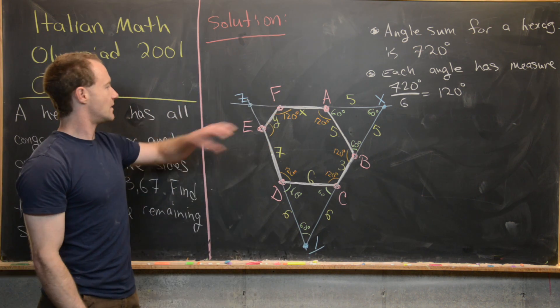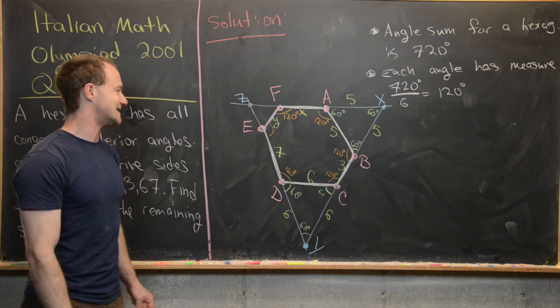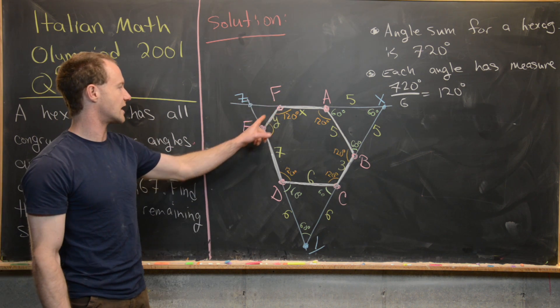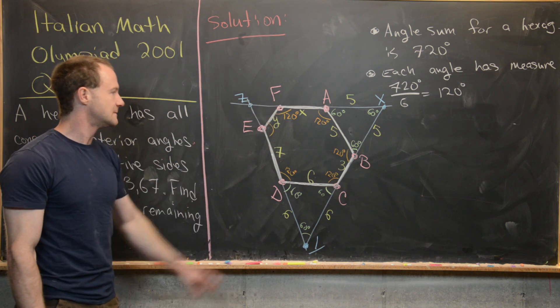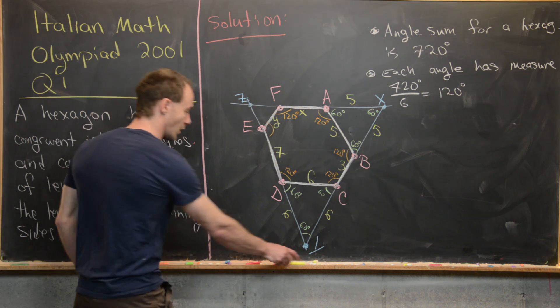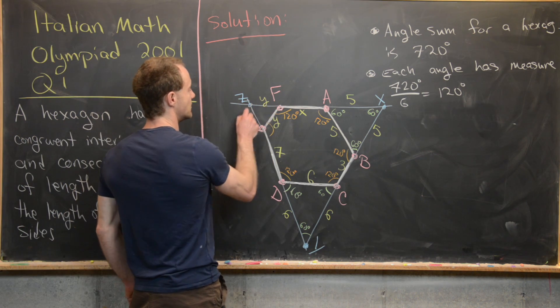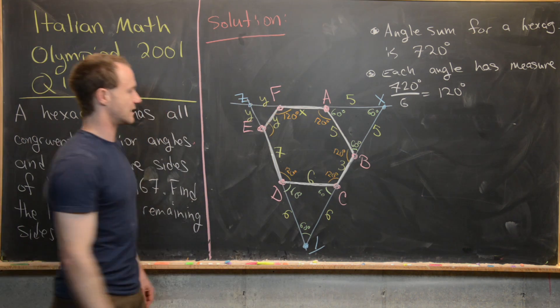Okay, fantastic. But now the same kind of thing works exactly up in this new triangle up here, FZE. But it has side length y, which is unknown, but that means here we've got two side lengths y.